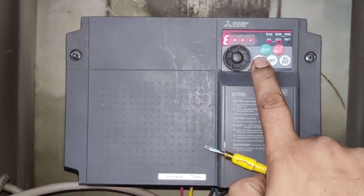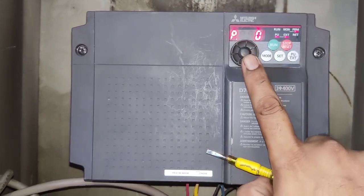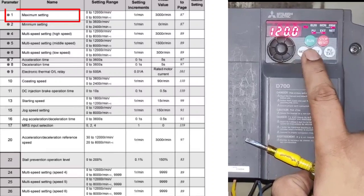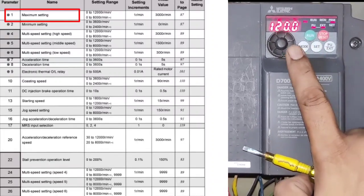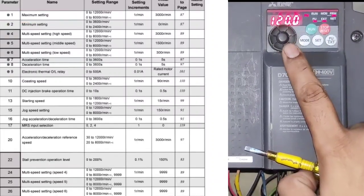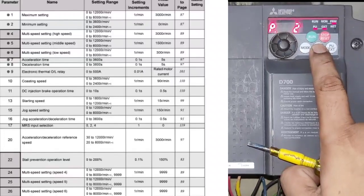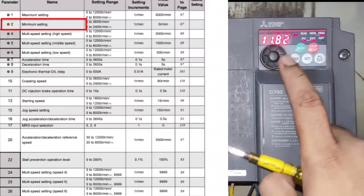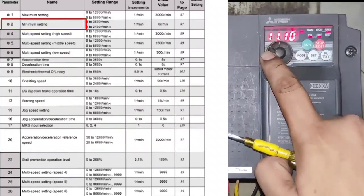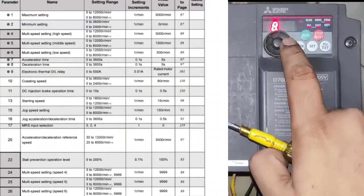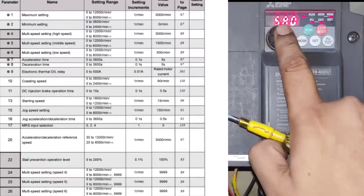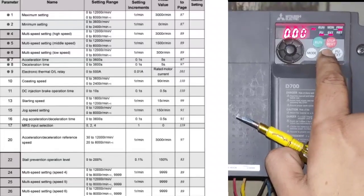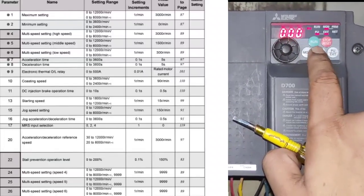Since our motor is small, we set 6 for torque boost. Next, P1 is for maximum frequency — we set 120 Hz. Whatever frequency you want to run your motor at, you can set it in P1. P2 is for minimum frequency, and minimum frequency should be zero, so we set 0 in P2.